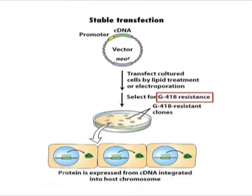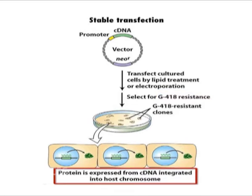If the toxin is then added to the cell culture, only those few cells with the marker gene integrated into their genome will be able to proliferate, while other cells will die. Only the cells with the stable transfection remain and can be cultivated further.